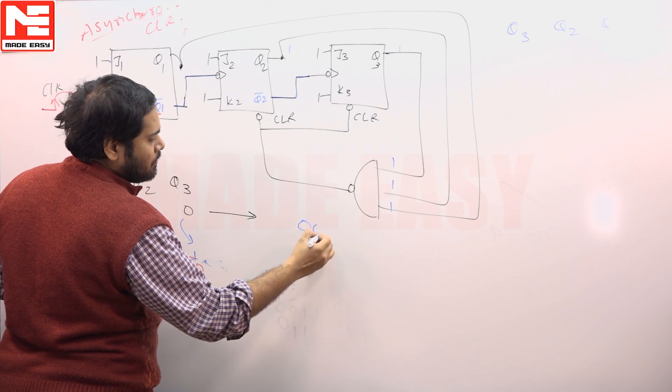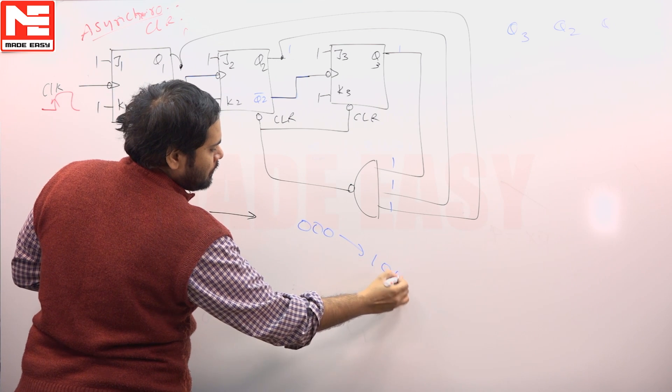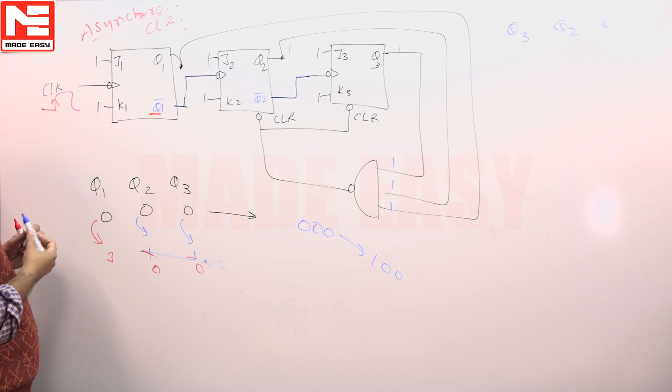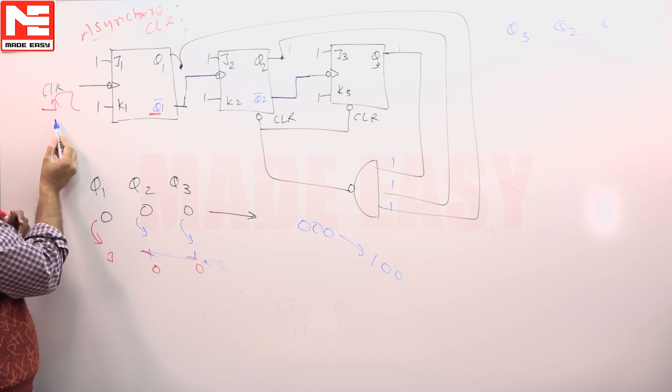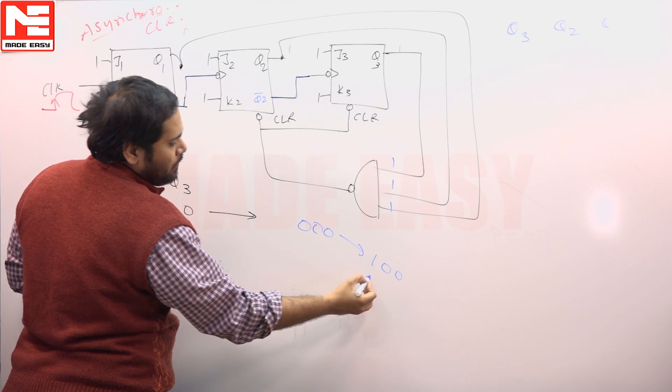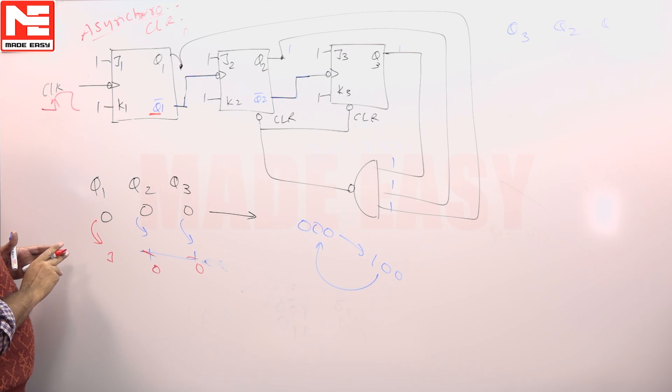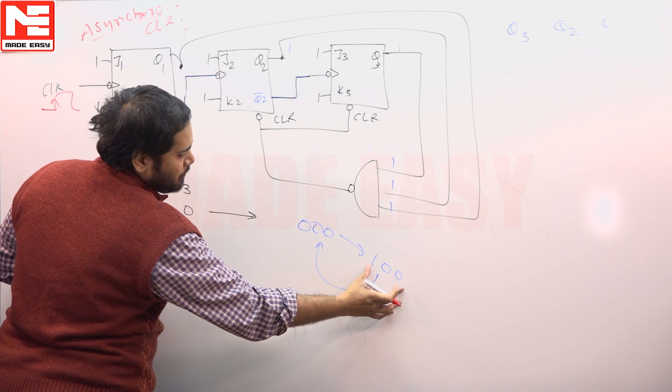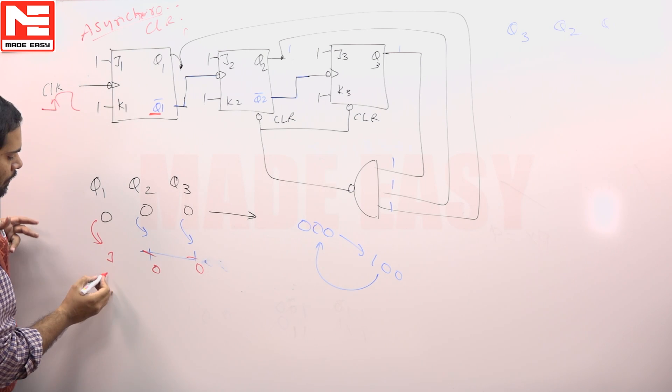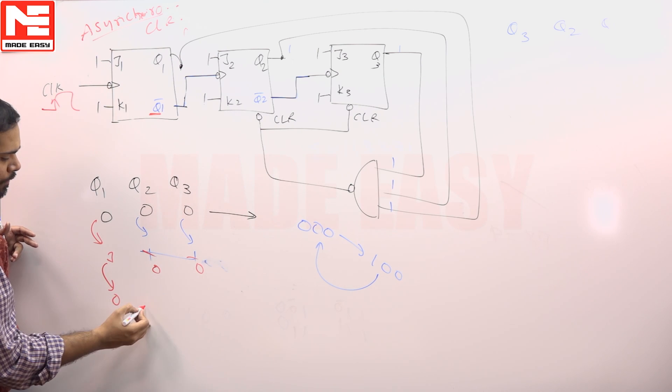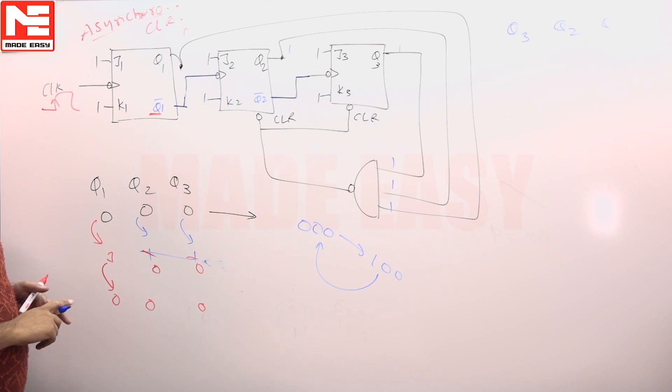That means from 1 0 0, the next state is going to be 1 0 0. Again, when you give one more clock pulse, this is going to go to 0. Once this goes to 0, the system will not get toggled, so the next state will be simply 0 0 0 only. Again, this switches to 0, this switches to 0, so these two will not change.